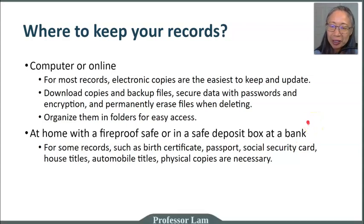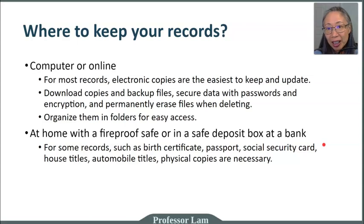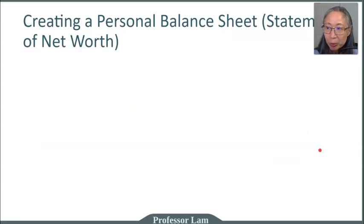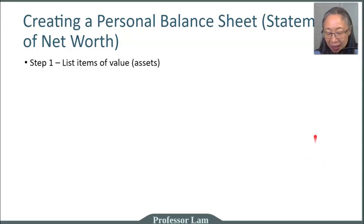Remember, locating the information is usually the hardest step for most people. Once you have the data available, we can arrange it in a format that is easy to use and provides valuable information. To do that, we'll be creating a personal balance sheet, also sometimes called a statement of net worth. The first step is to list all the things that you own — we call them assets — and we classify them into four major categories.